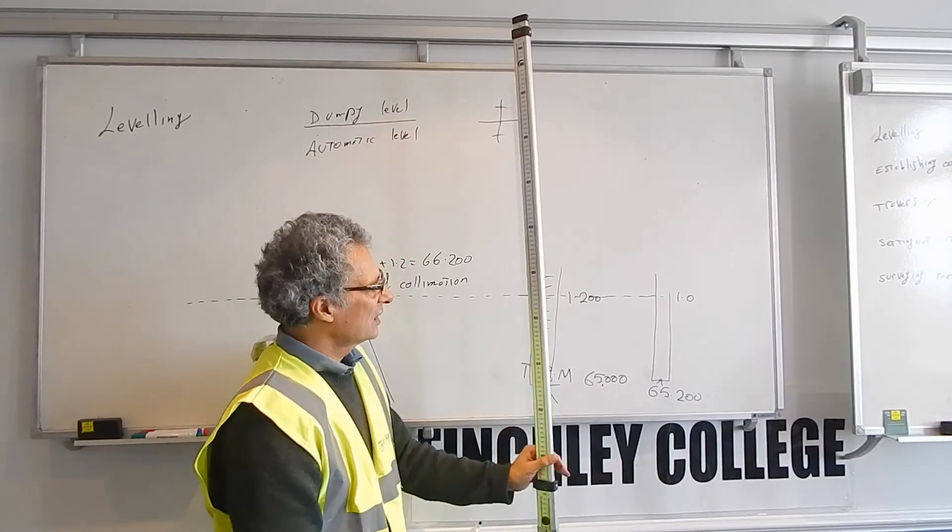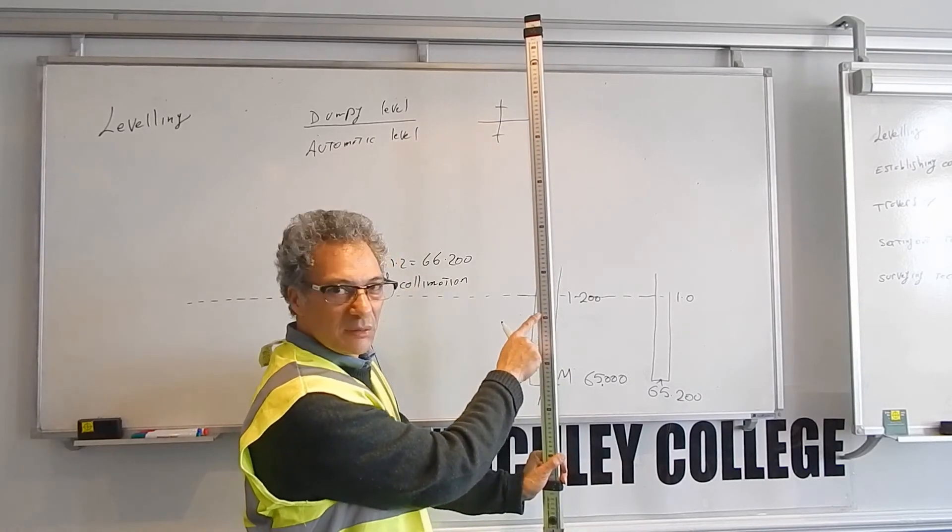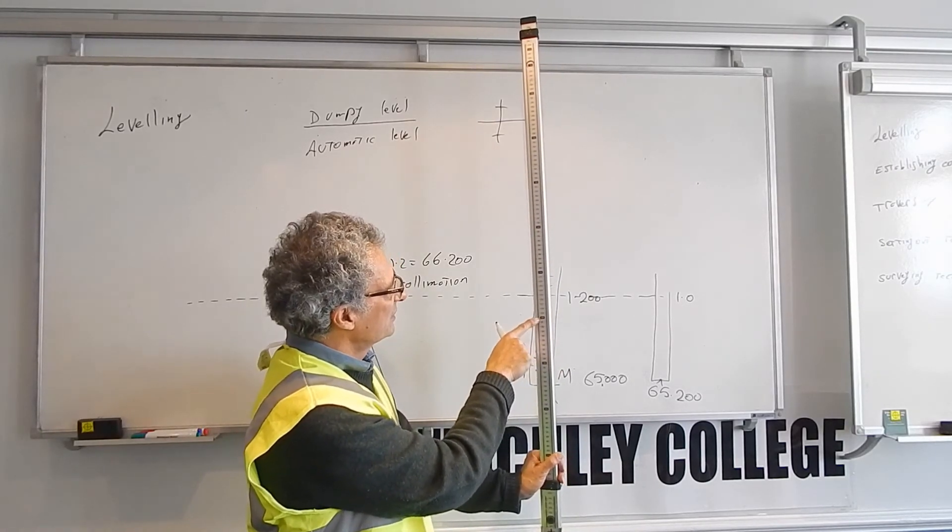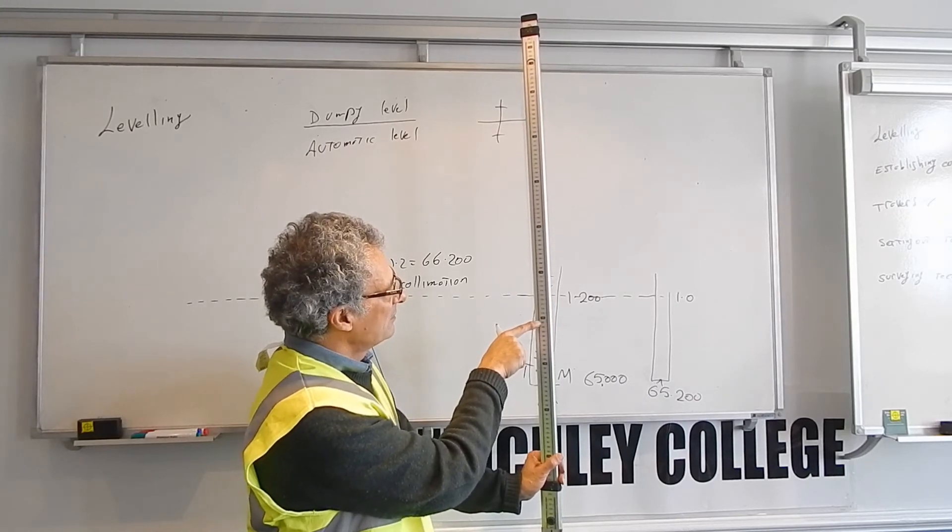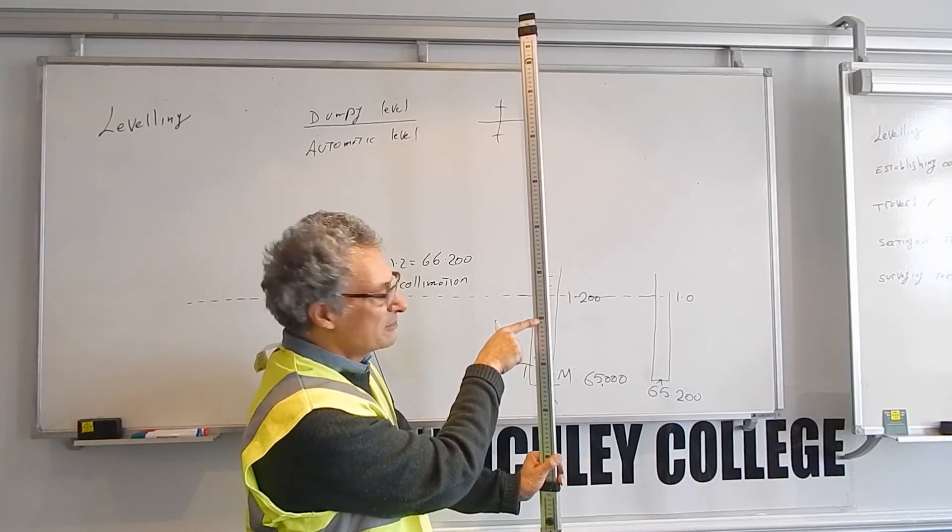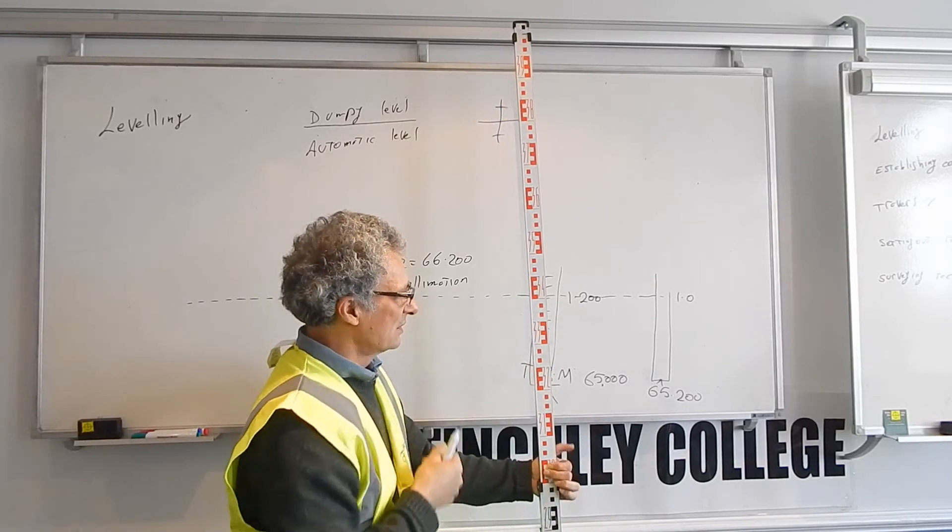On the other side of the staff, there are also graduation marks, and these are for the millimeters. For example, it says 2,780, 2,790, 2,800. There are millimeter gaps, every millimeter is shown.